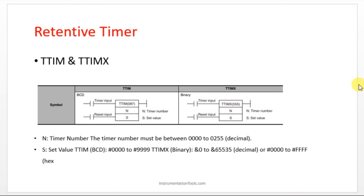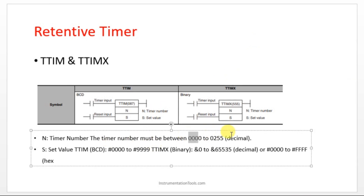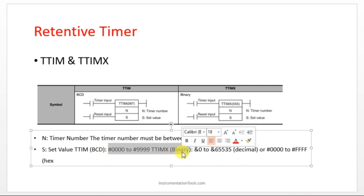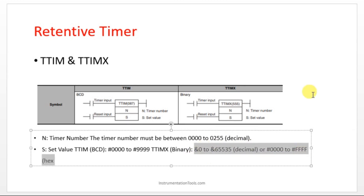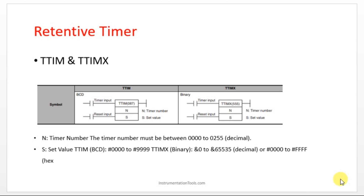In CX Programmer we have two types of return to timers: TTIM and TTIMX. Both work the same way, but TTIM is a BCD type timer and TTIMX is a binary type timer. 'A' is the timer number, which must be between specified values, and we have a set value range — one range for BCD and another for binary.